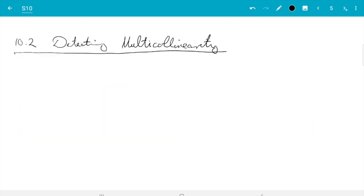Now what I want to do here is I want to discuss a more formal criterion, and that's the condition number.